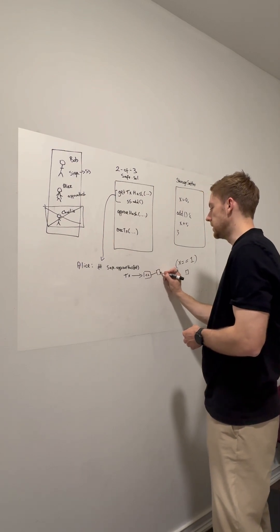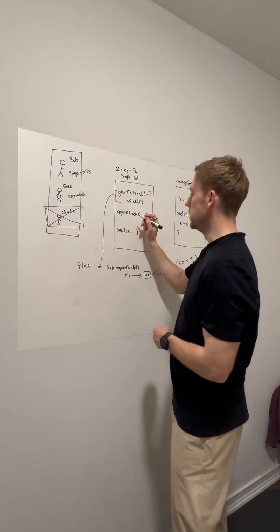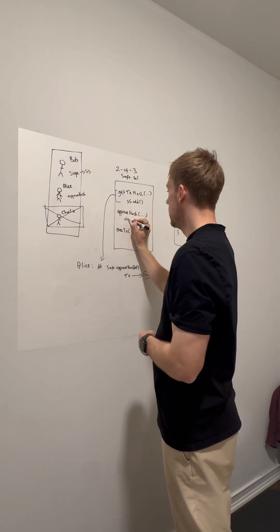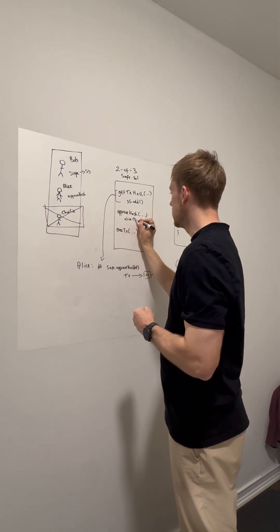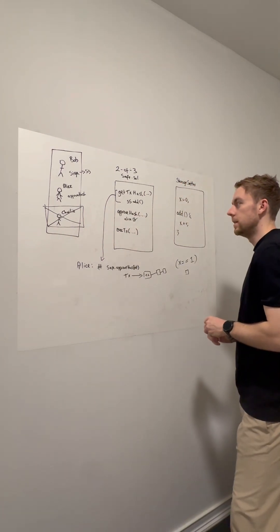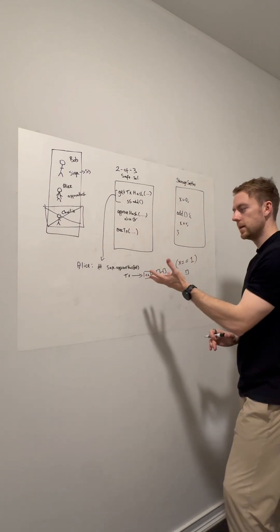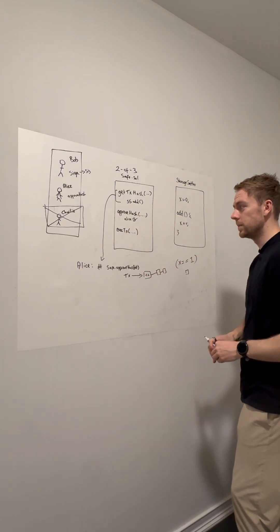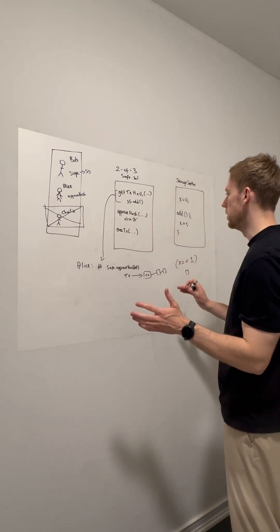It gets mined into the chain, the storage gets updated on the contract, and the safe is now aware that Alice has approved this transaction hash. That's pretty simple and straightforward.